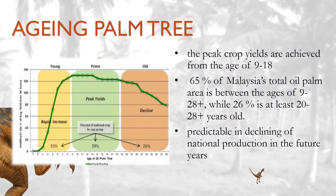At present, it is estimated that 65% of Malaysia's total oil palm area is between the age of 9 to 28 years and older, while 26% is at least 20 to 28 years and older. This implies that the vast majority of trees have already reached or passed their peak yielding years, and we can completely predict a decline in national production in future years if adequate steps are not taken to replant these aging trees in a timely manner.